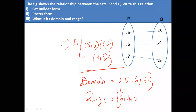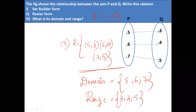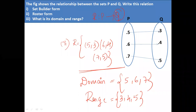What is the co-domain? The relation is from P to Q. Q is the co-domain — not P. Co-domain is where the relation goes, where it has to end. That is called as co-domain. Is it clear?